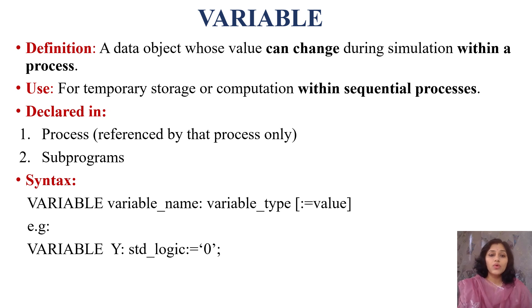Next is variable. A data object variable is a data object whose value can change during simulation within a process. Value of variable can be updated during simulation. Whereas in case of signals, value updates after delta delay. Here it can change during simulation, which means variables are faster than signals. They are used for temporary storage or computation within sequential processes.